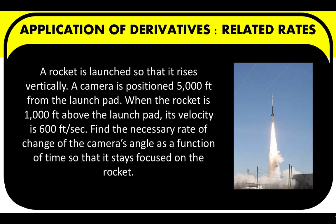Here is our problem for today. A rocket is launched so that it rises vertically. A camera is positioned 5,000 feet from the launch pad. When the rocket is 1,000 feet above the launch pad, its velocity is 600 feet per second. Find the necessary rate of change of the camera's angle as a function of time so that it stays focused on the rocket.